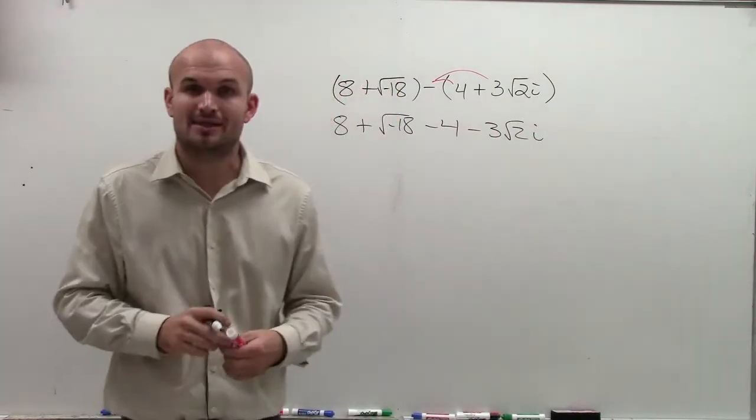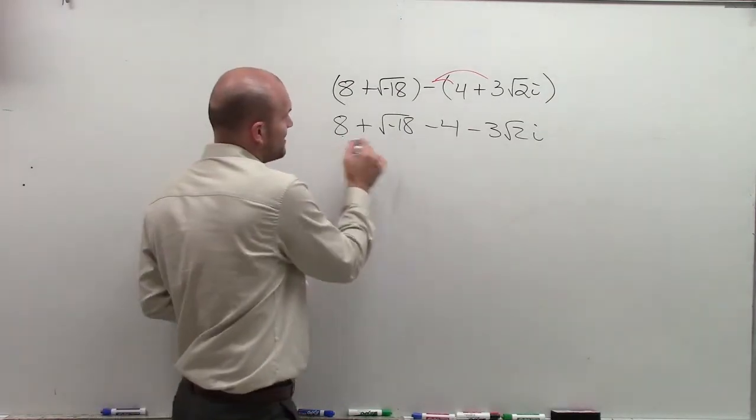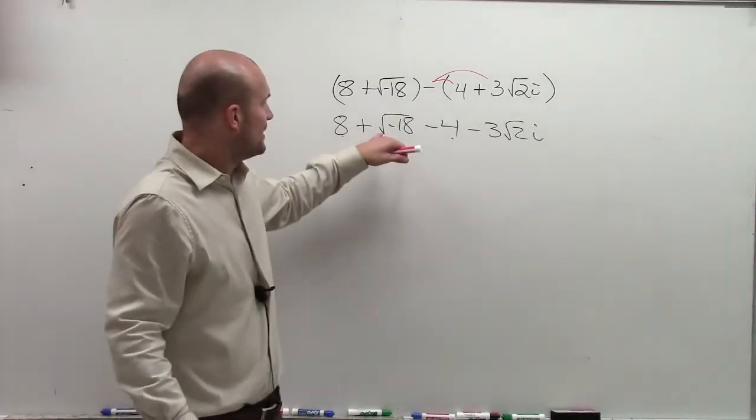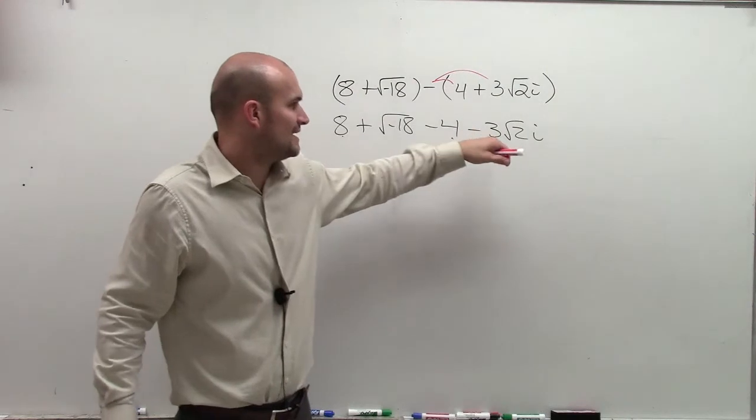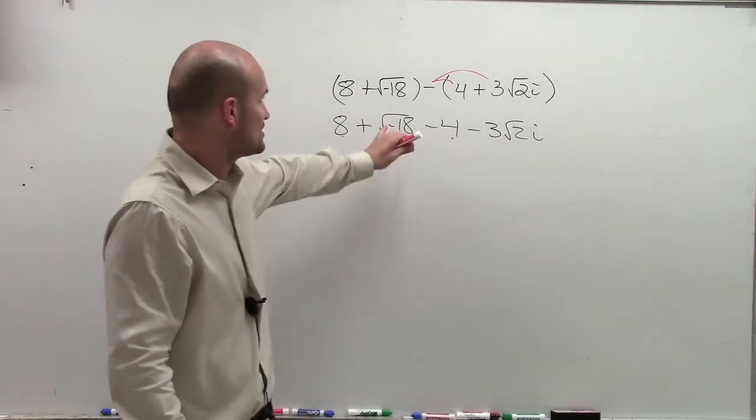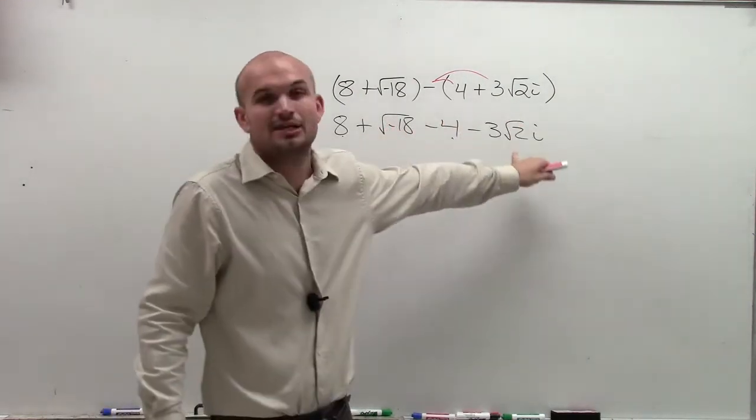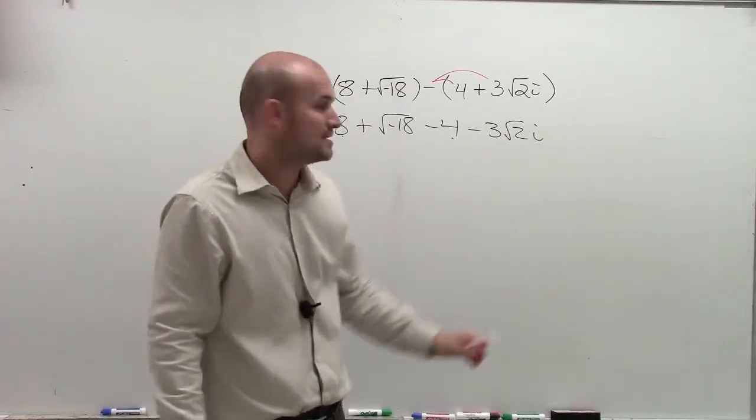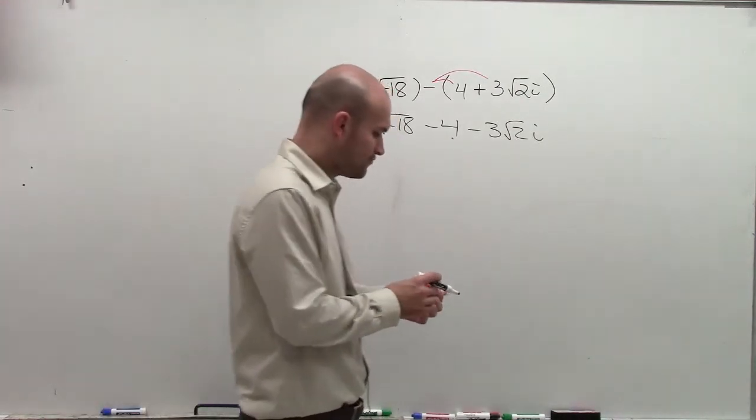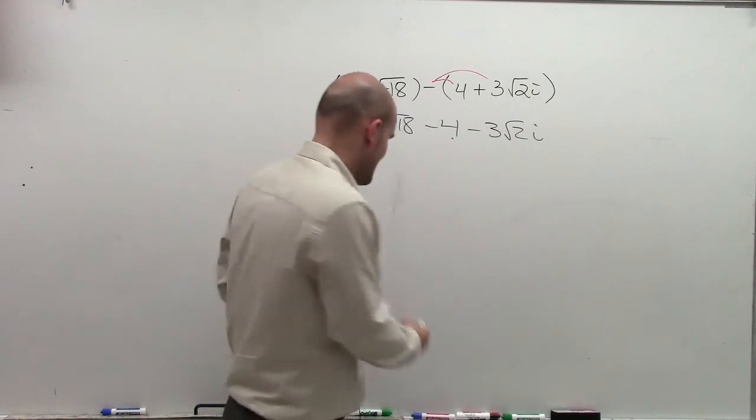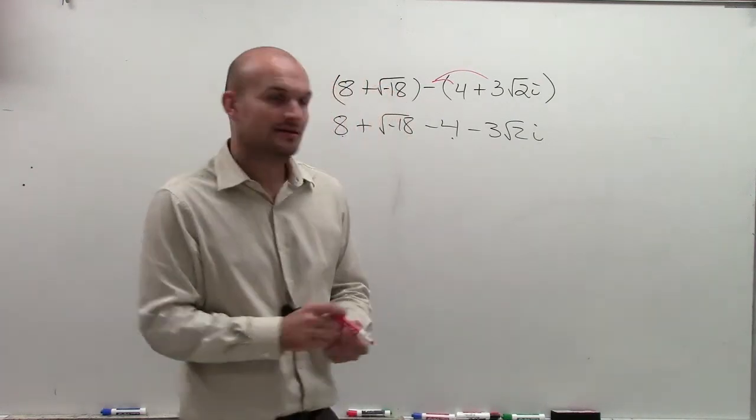Now, the next thing is we need to combine like terms. I know I have my numbers. Those are like terms. But I have a square root of negative 18 and a negative 3 times square root of 2i. Well, I can't add a square root of negative 18 and a square root of 2 because they're not like terms. So what I'm going to do is I am going to rewrite the square root of negative 18 as a complex number.